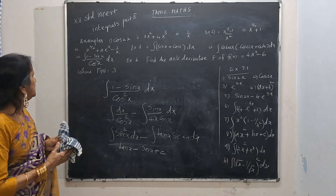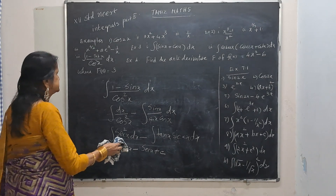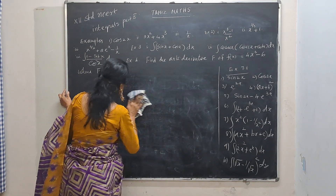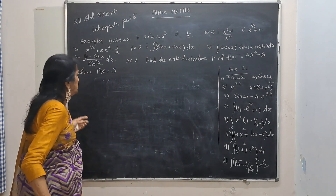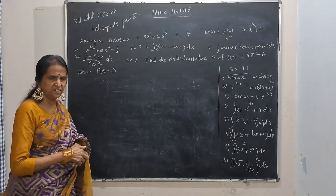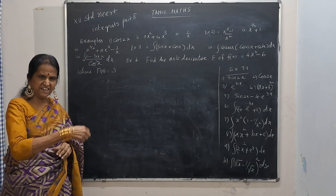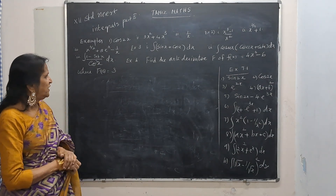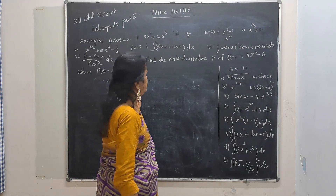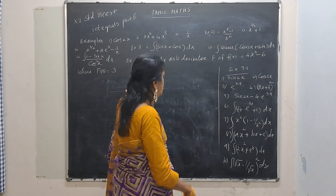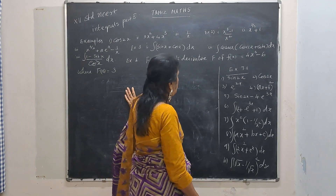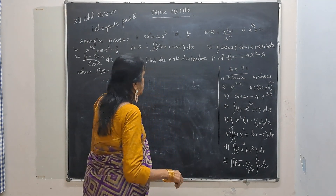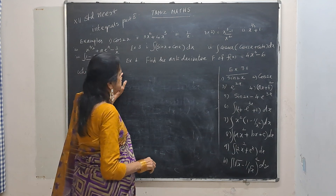Two more new formulas to our list. Now next one: find the antiderivative. Integration is called antiderivative. Find the antiderivative of f(x) equal to 4x cubed minus 6, where f(0) is 3.